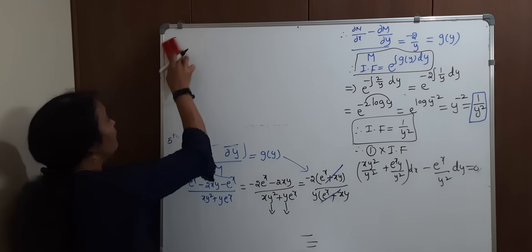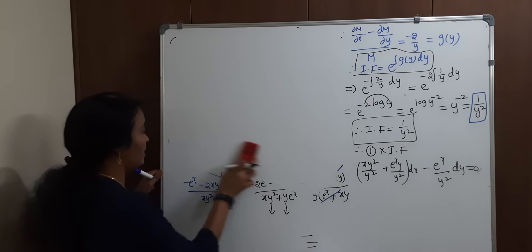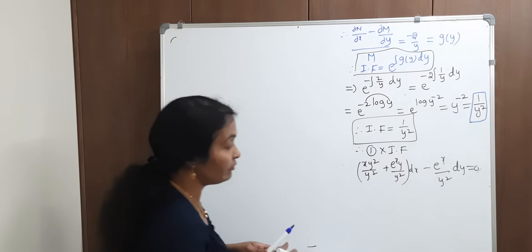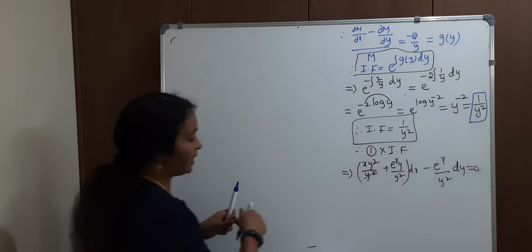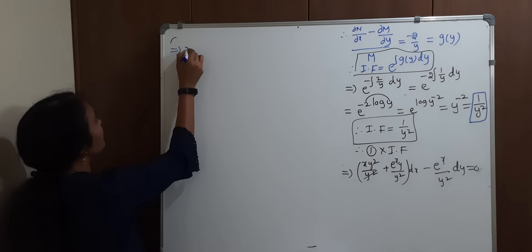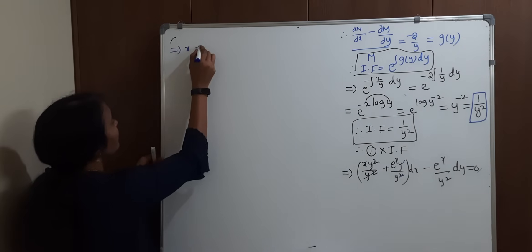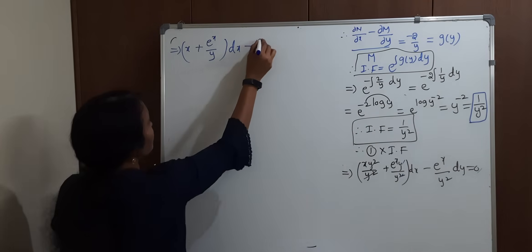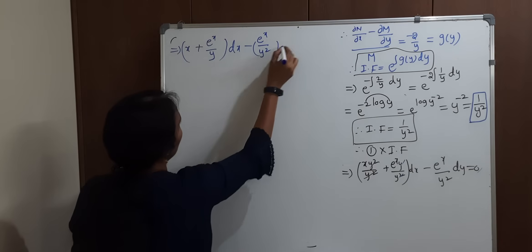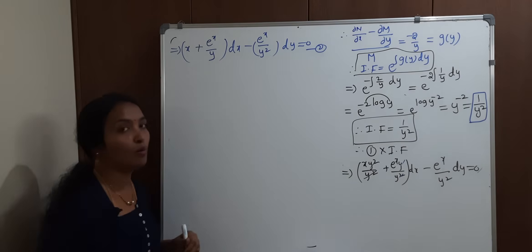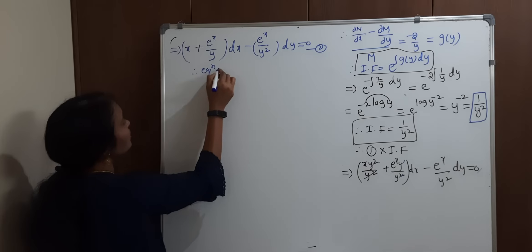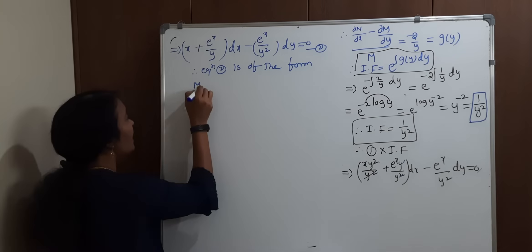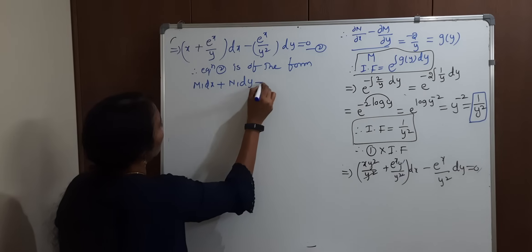Cancel out the common terms. You need to find the solution of this exact differential equation. After cancellation, the solution formula is: integral of M1 dx plus terms of N1 without x, into dy equals constant. After simplification, y squared cancels and we get: x plus e power x upon y, into dx. y cancel leaves e power x upon y. No remaining terms without x in N1.